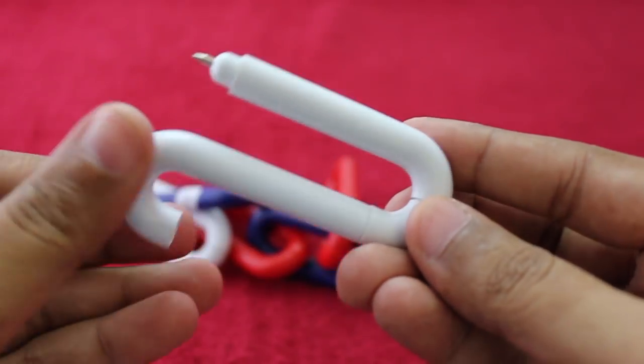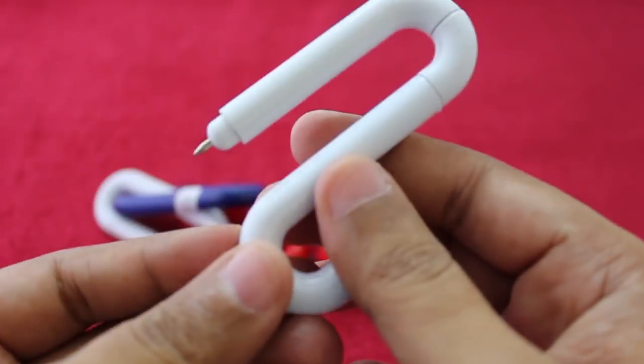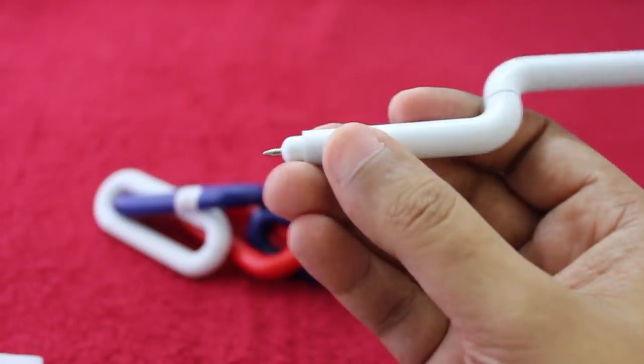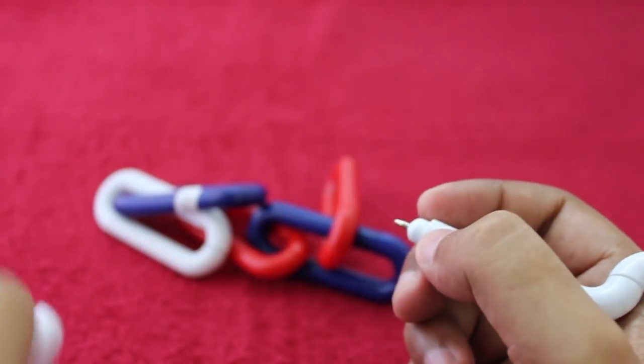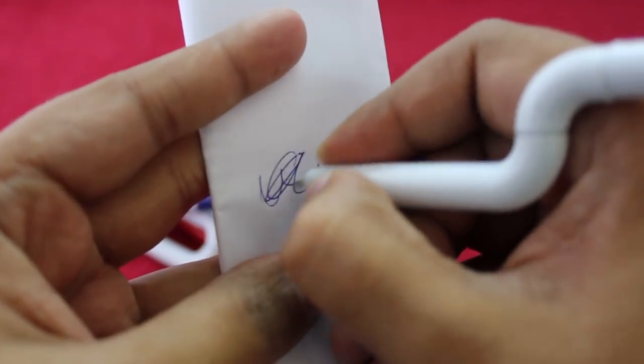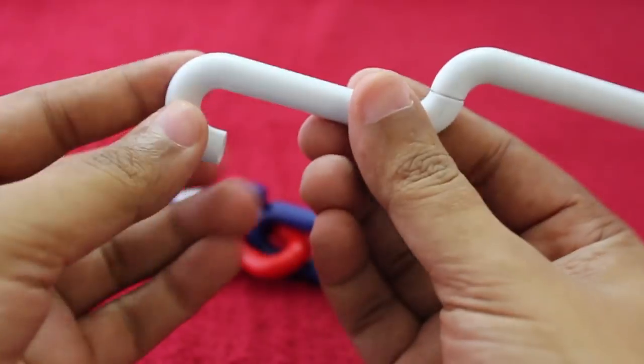To open it up, you just pull it up like this and twist it around. Now you can use it as a pen, and as you can see it works well. Once you're done, just twist it back.